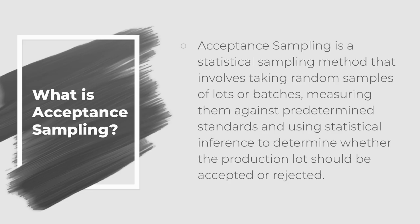So what is acceptance sampling? Acceptance sampling is a form of testing that involves taking random samples of lots or batches of finished products and measuring them against predetermined standards. In other words, it's a statistical sampling method used to determine whether to accept or reject a production lot.